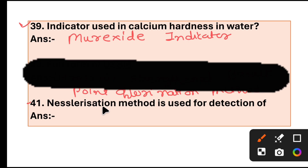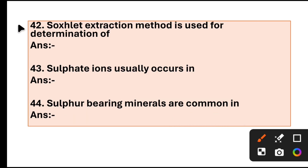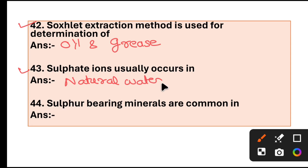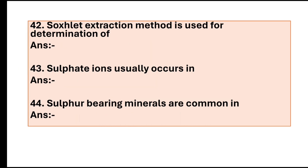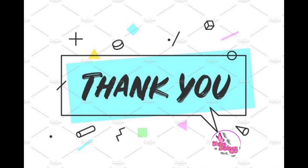Question 41: Kjeldahl method is used for the detection of nitrogen ammonia. Question 42: Solid extraction method is used for the determination of oil and grease. Question 43: Sulfate ion usually occurs in natural water. Question 44: Sulfur bearing materials are common in sedimentary rocks. Question 45: Turbidimetric method is used for determination of sulfate ions.